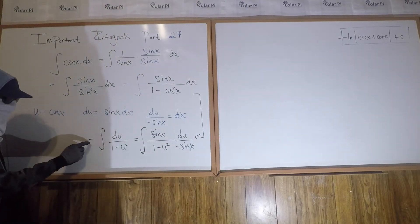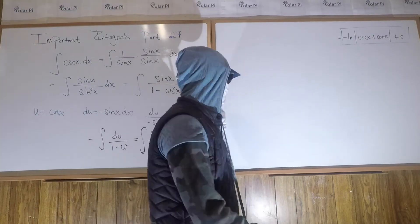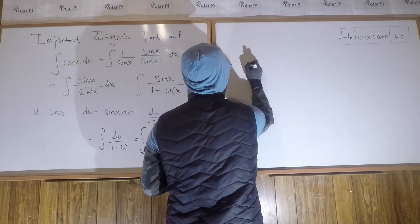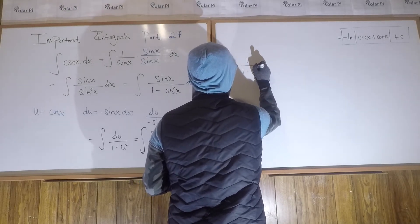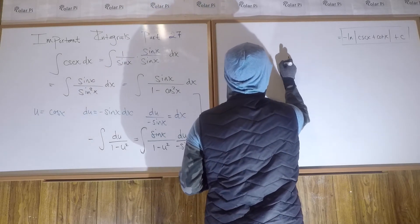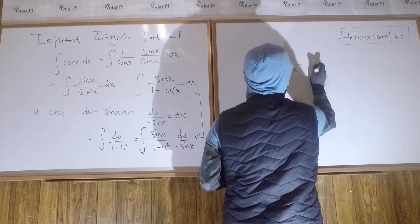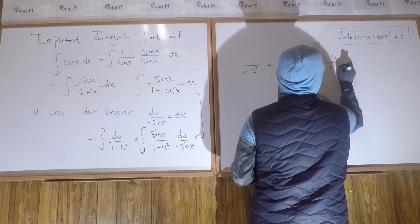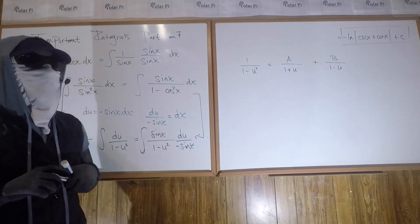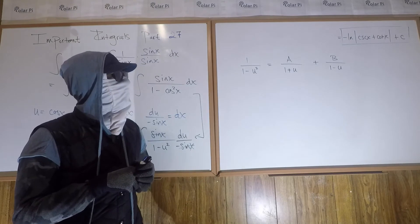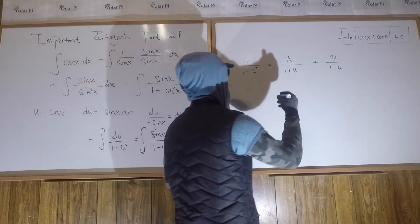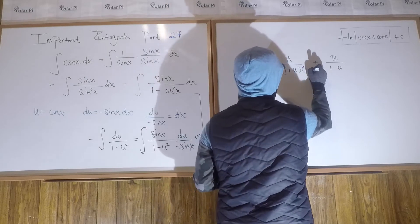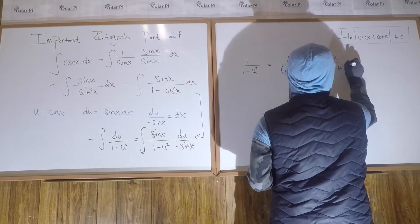Setting aside that negative, the integral of du over 1 minus u squared is clearly just partial fraction decomposition. Specifically, we want to write 1 over 1 minus u squared as A over 1 plus u plus B over 1 minus u. I have lots of videos on partial fraction decomposition, so I'm going to do it really quickly. The first thing we do is make the denominator the same on both sides, so we get 1 minus u times 1 plus u which is 1 minus u squared, all over 1 minus u squared.